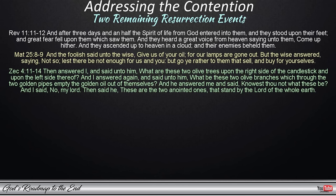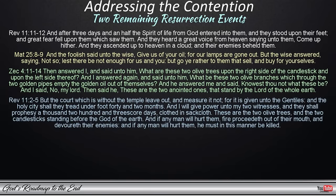The two witnesses are given power to destroy their enemies or any that would hurt them, while they are emptying the golden oil out of them and giving it to those who did not have oil in their lamps when the bridegroom returned. This passage in Zechariah is clearly linked to the following passage in Revelation, where the two witnesses' ministry is linked to the formation of the outer court: 'But the court which is without the temple leave out, and measure it not. For it is given unto the Gentiles, and the holy city shall they tread under foot forty and two months. And I will give power unto my two witnesses, and they shall prophesy a thousand two hundred and threescore days clothed in sackcloth. These are the two olive trees, and the two candlesticks standing before the God of the earth. And if any man will hurt them, fire proceedeth out of their mouth and devoureth their enemies.'